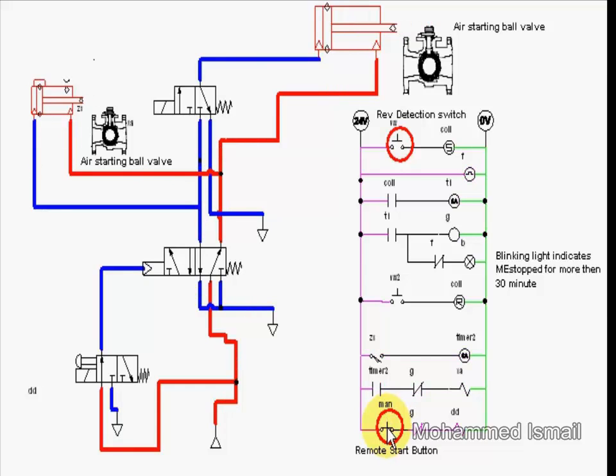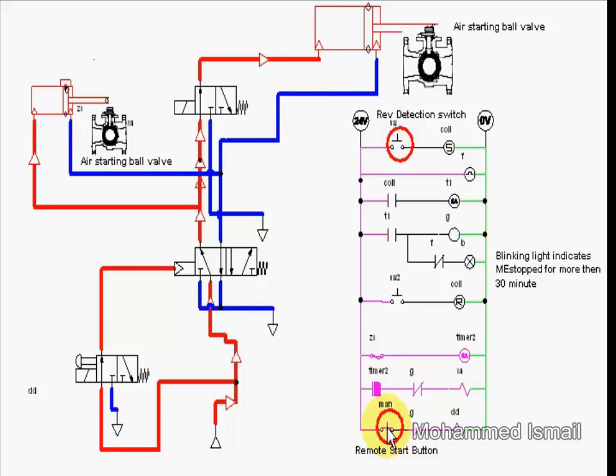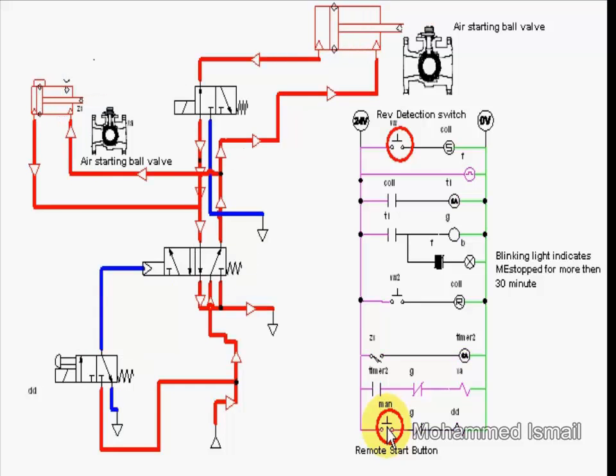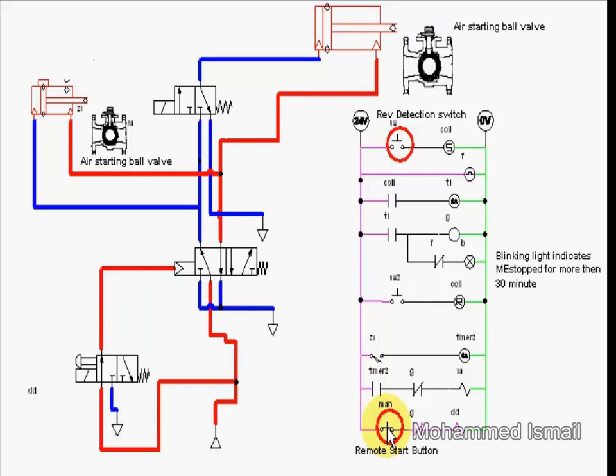The above figure shows the pneumatic and electrical control implemented to achieve the slow turning sequence. The sequence is achieved by pneumatic directional valve, solenoid valve, timer, and revolution detector.